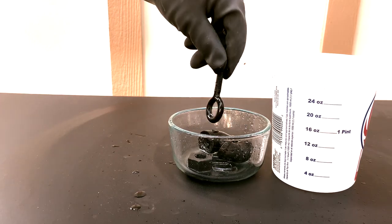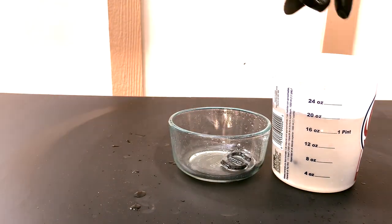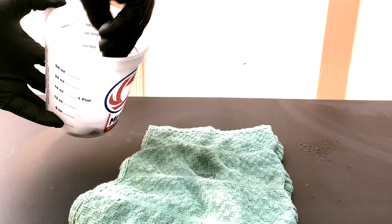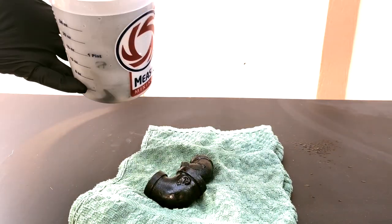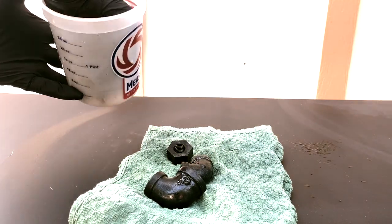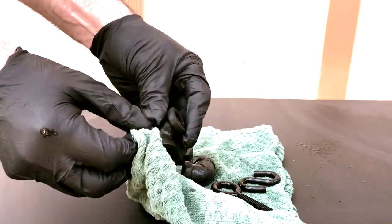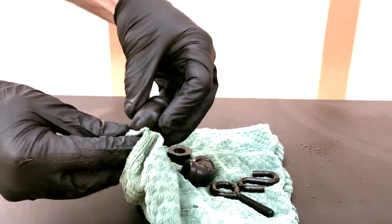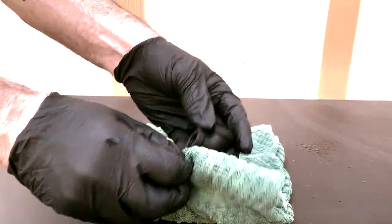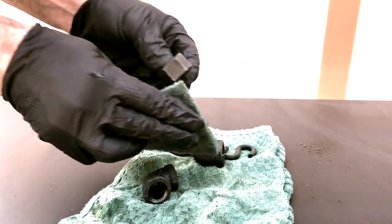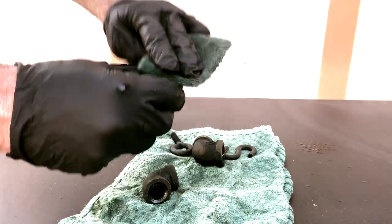It only takes about a minute to finish reacting and then we can rinse again. A thin layer of orange rust will quickly begin to form on top of the black oxide as it dries. A scotch-brite pad or steel wool will easily remove the rust and bring back some of the shine of the metal.